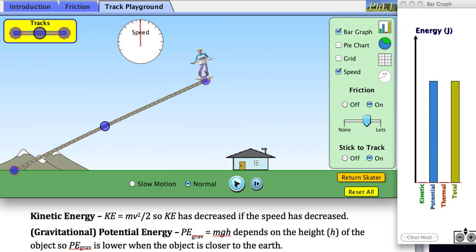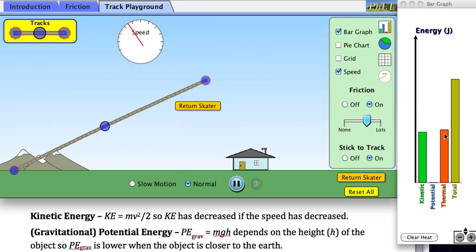You can see what's going to happen. The sum has to be the total, so the kinetic just can't go up as much if there's thermal energy. You can't see what's going on, but because there's friction, the thermal energy is going up still, and the skater way off the screen is slowing down to a halt.